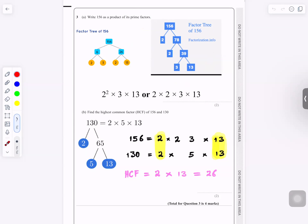Part B: Find the highest common factor of 156 and 130. Find the factors of 130. 130 is an even number, so it's 2 times 65. And then 5 times 13.